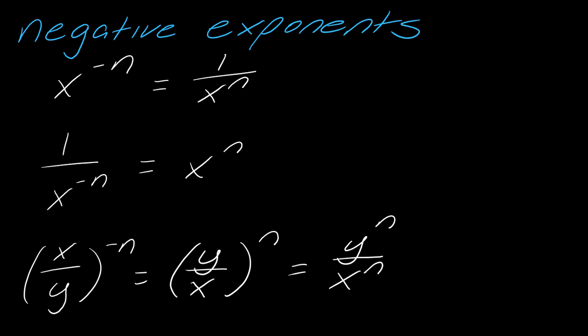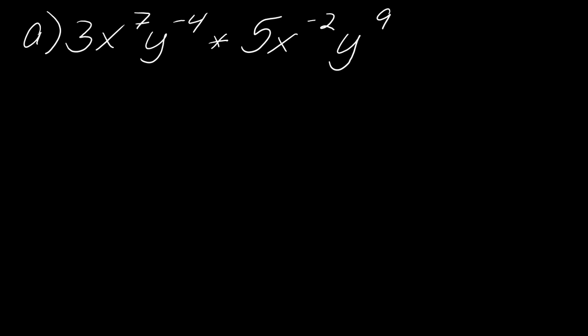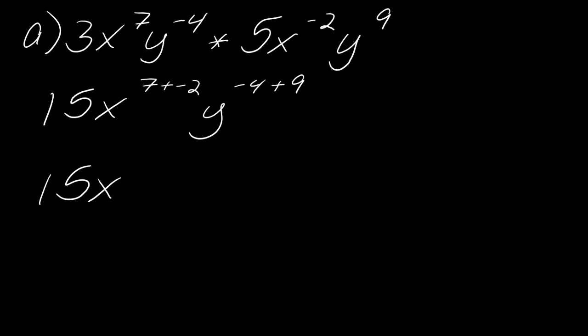Now we'll go through some practice problems. You can visit dividemandconquermath.com for the full problem set. The goal with all exponent problems is to have no negative exponents in the final answer. For this first problem, multiply the coefficients 3 and 5 to get 15, then add the exponents: for x's it's 7 plus negative 2, and for y's it's negative 4 plus 9, giving a final answer of 15x to the fifth y to the fifth.